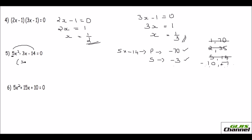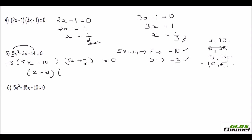When writing the factors, put 5x in both factor brackets, then write the numbers: minus 10 in one and plus 7 in the other, equal to 0. For the first bracket, since 5 is common, divide through by 5 to get x minus 2. The second bracket has no common factor, so it stays as 5x plus 7 equals 0. You can then find x by equating each factor to 0.